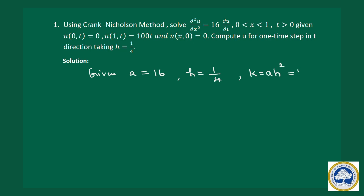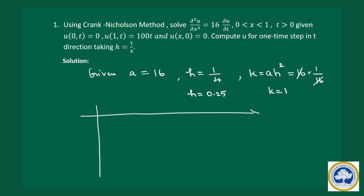For the Crank-Nicolson method, k equals a*h². Substituting a equal to 16 and h equal to 1/4: h² is 1/16, and 16 times 1/16 gives k equal to 1. Alternatively, h can be written as 0.25. Now setting up the grid: x varies from 0 to 1 with step h equal to 0.25, giving values 0, 0.25, 0.5, 0.75, and 1. Since k equals 1, t goes from 0 to 1 in one step.